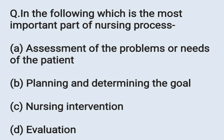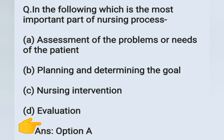Today's first question: which is the most important part of the nursing process? Options: A - assessment of the problem or needs of the patient, B - planning and determining the goal, C - nursing intervention, D - evaluation. The nursing process consists of assessment, where we collect objective and subjective data from the patient. On that basis, we formulate the nursing diagnosis and set the goal, then plan the care, and the final step is evaluation. The most important part is assessment. Correct answer: option A.